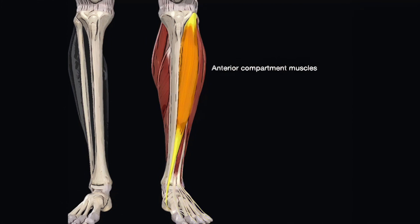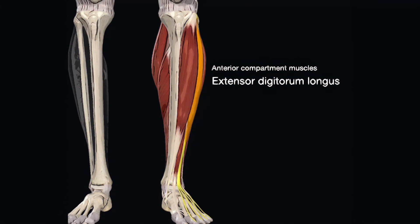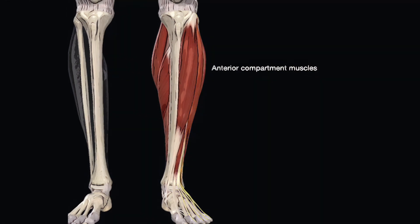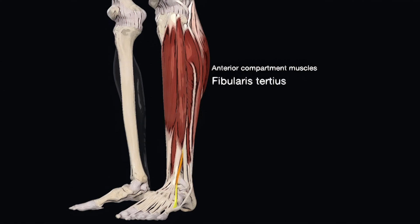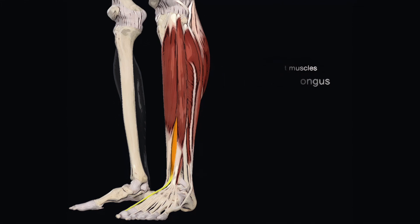There are four muscles in the anterior compartment. The tibialis anterior is responsible for dorsiflexion of the talocrural joint and inversion of the subtalar joint. The extensor digitorum longus also dorsiflexes the talocrural joint and everts the subtalar joint, and in addition extends the metatarsophalangeal and interphalangeal joints of the related digits. The fibularis tertius dorsiflexes the talocrural joint and everts the subtalar joint. And finally, the extensor hallucis longus dorsiflexes the talocrural joint and extends the metatarsophalangeal and interphalangeal joints of the first digit.